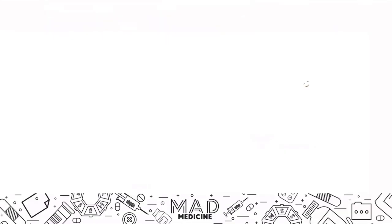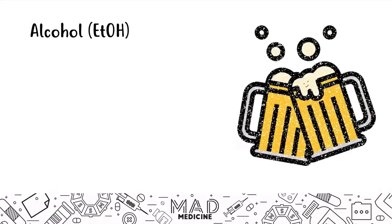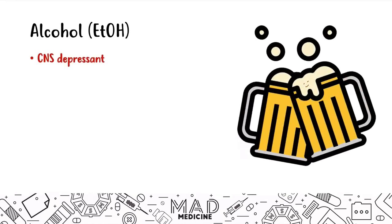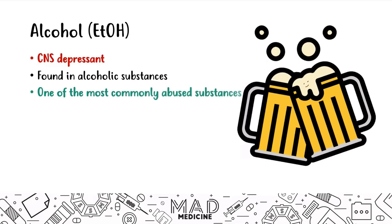So let's first talk about alcohol. Alcohol is something everyone knows about — it's a CNS depressant, and that's why you get drunk and have debilitating side effects, especially when it comes to your mental capacity. It's found in alcoholic substances and it's one of the most commonly abused substances, mainly because of its ease of access and its mind-altering effects.